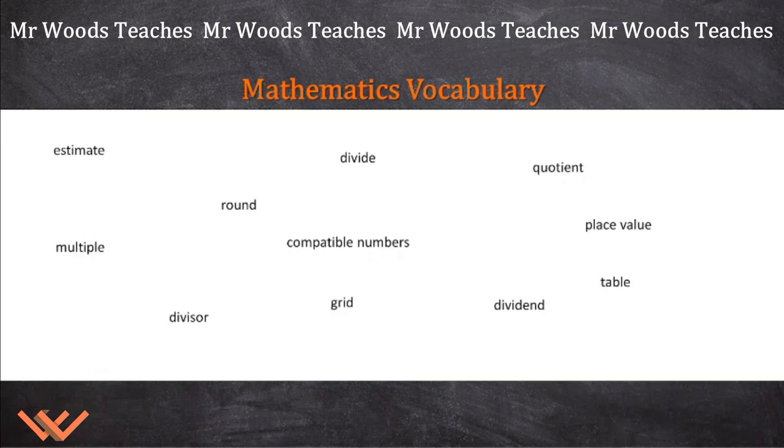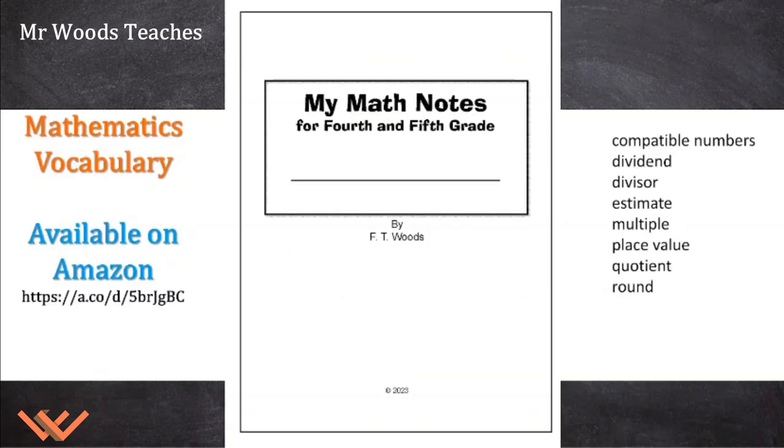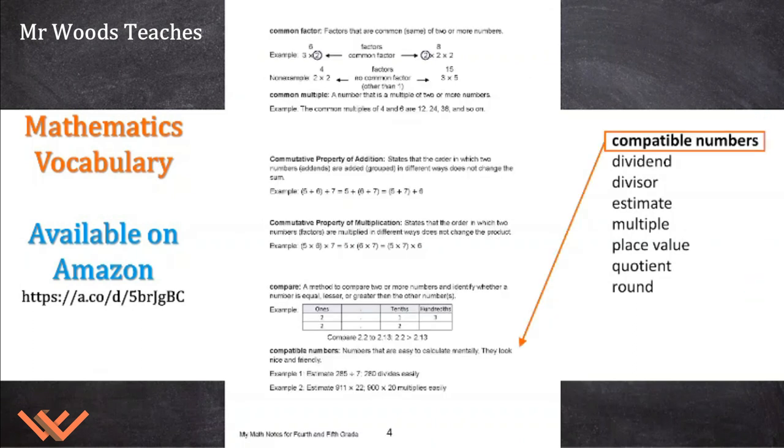Let's take a look at some of this in a little more detail. First, you can look up anything, but I have something very simple for 4th and 5th grade. It's available on Amazon. There's the URL. It's going to cover a bunch of vocabulary, including what we have over here. First, compatible numbers.